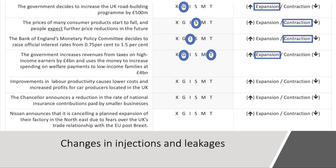Fifth: improvements in labour productivity cause lower costs and increased profits for car producers located in the UK. I think that would probably be expansionary — higher profits mean that firms have more money to reinvest in machinery, factory space, and so on.